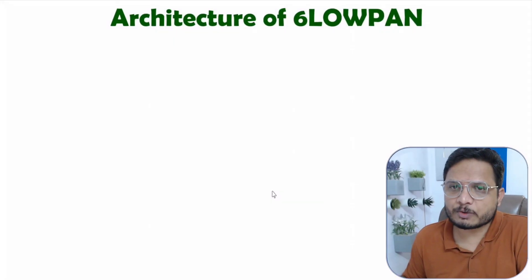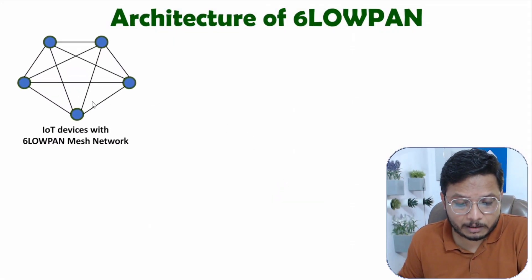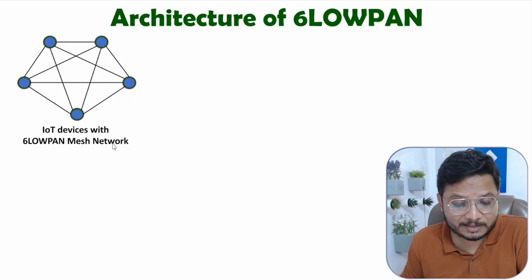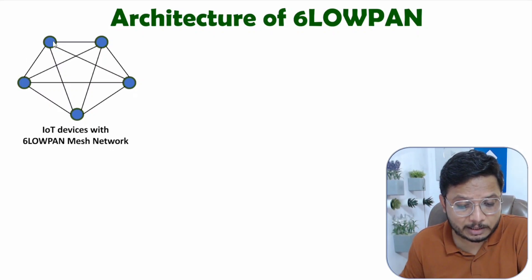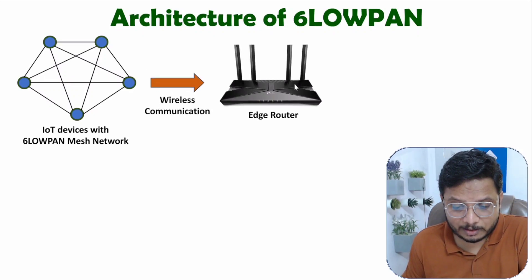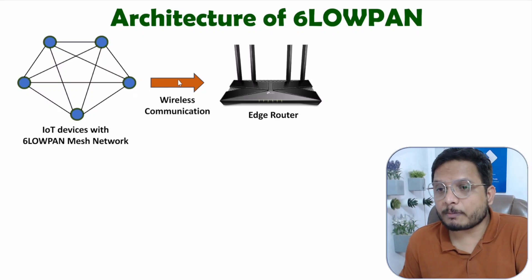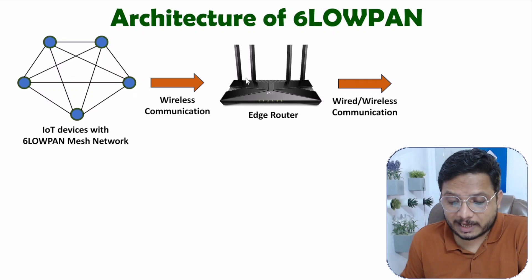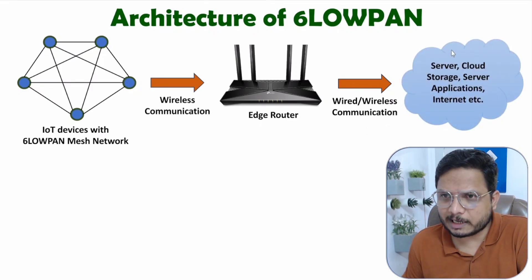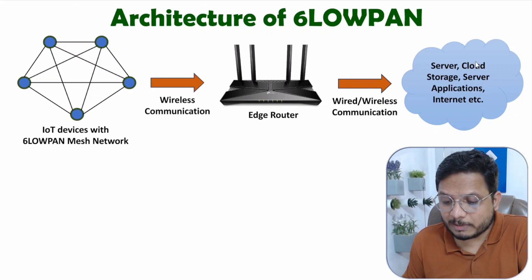Let me show you the architecture. First, we create a low-power wireless area network using IoT devices, and that forms a mesh network where all nodes — the IoT devices — are connected with each other. This network communicates using IPv6 protocol, and the edge router can transfer data to the cloud using wired or wireless communication.